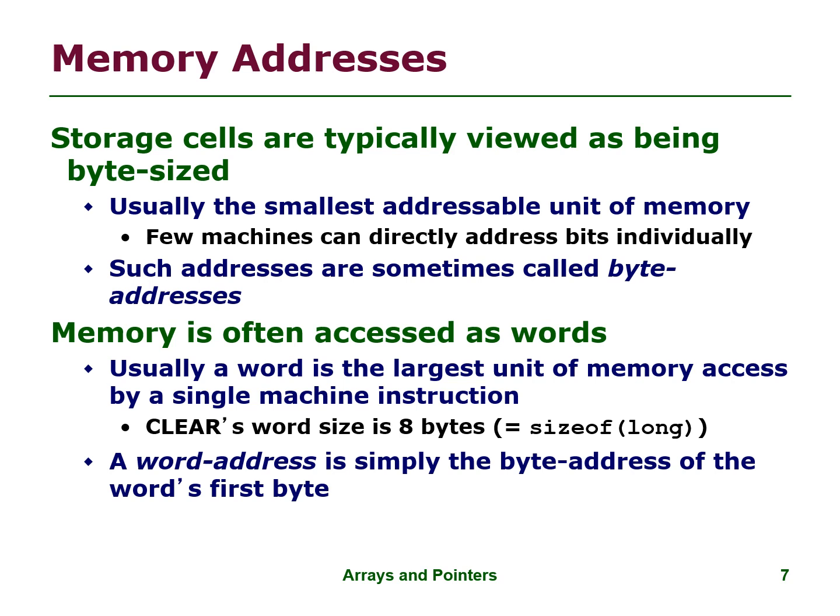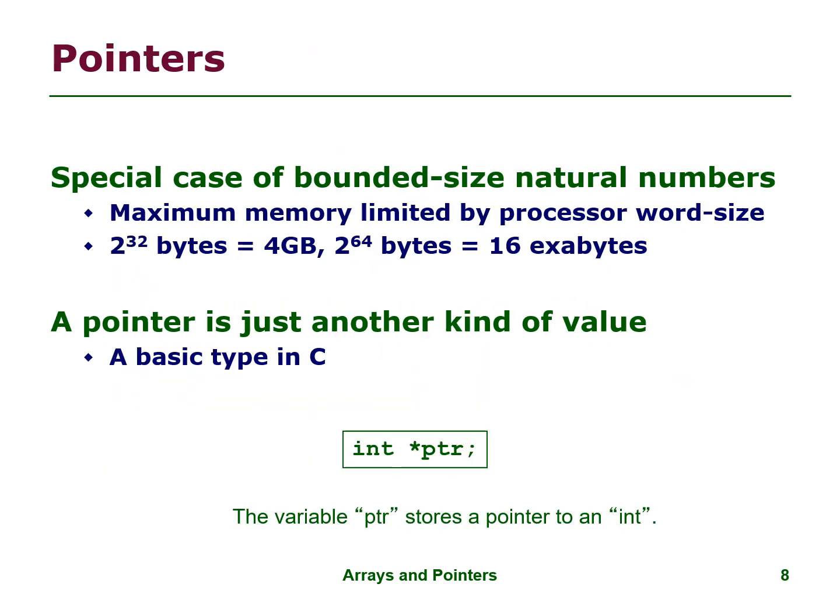A word address is simply the byte address of the word's first byte. Now we move on to pointers. Pointers are a special case of bounded-size natural numbers. Maximum memory is limited by processor word size. A pointer is just another kind of value — a basic type in C.